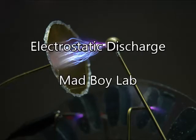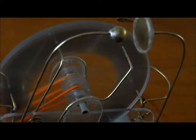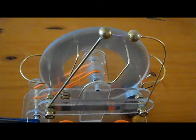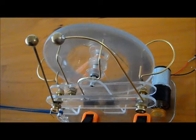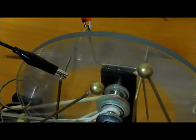You're watching Madboy Labs Electrostatic Discharge. We're going to use a Wimshurst machine to make some observations about the discharge of high voltage direct current and how it's affected by the physical configurations of spark gap terminals.